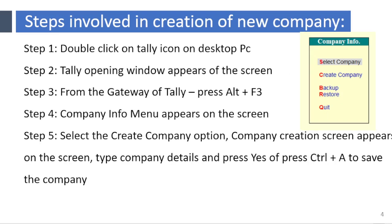Steps to create a new company in Tally: from the Gateway of Tally, press Alt+F3. The Company Info menu appears on the screen. Select the Create Company option. The company creation screen appears on the screen. Type the company details and press Yes or press Ctrl+A to save the company.